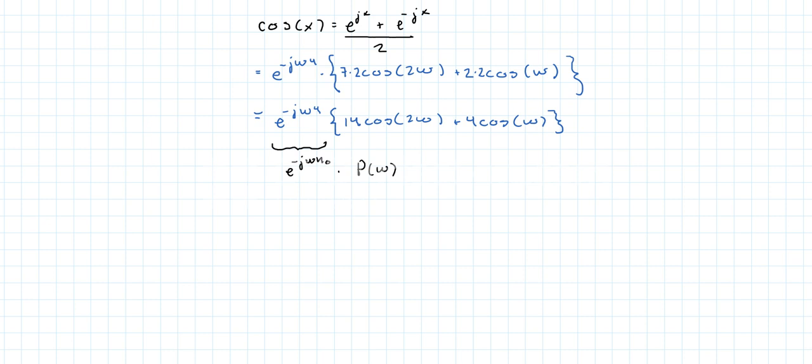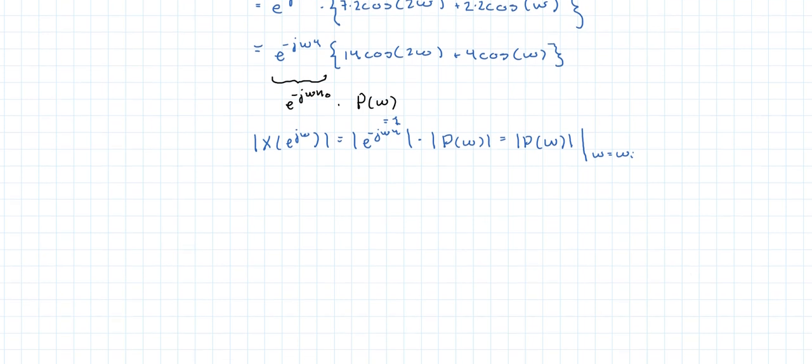Now if you wanted to get the norm of this, well, you would say that the norm of x of e to the j omega is equal to the norm of e to the minus j omega 4, that's equal to 1, times the norm of p of omega and so it would be the norm of p omega evaluated at omega equals omega sub i, whatever omega you want.